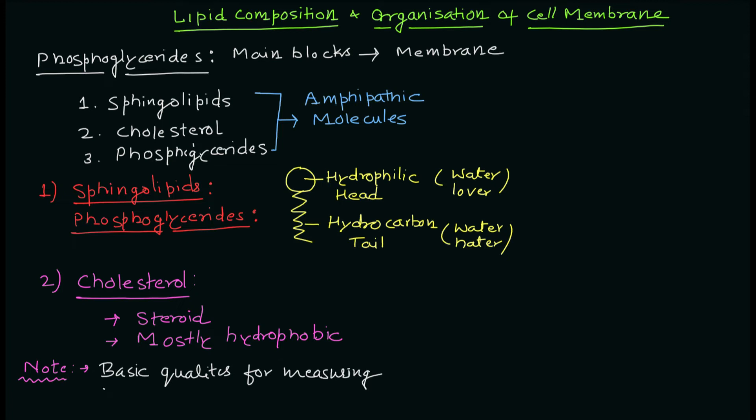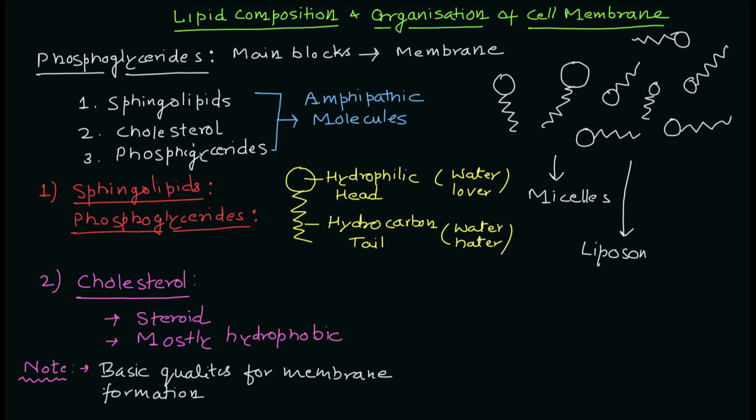So these lipid molecules have this basic quality to synthesize or construct the cell membrane or the plasma membrane. Now when you have the solution of these lipid molecules, these sphingolipids or phosphoglyceride molecules, what is going to happen is when you disturb the solution they are going to form three types of structures.